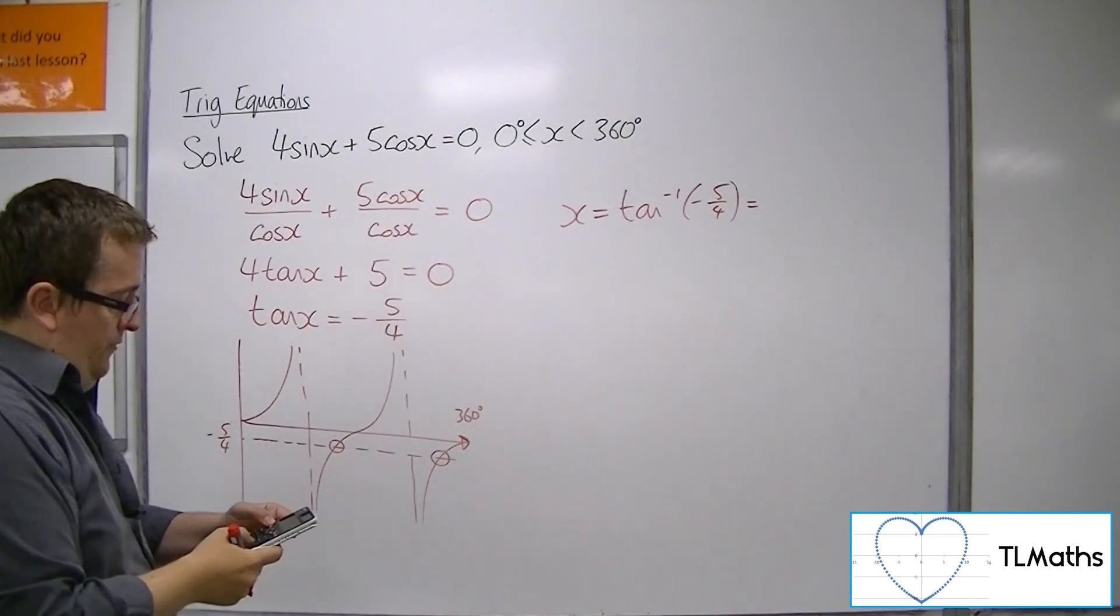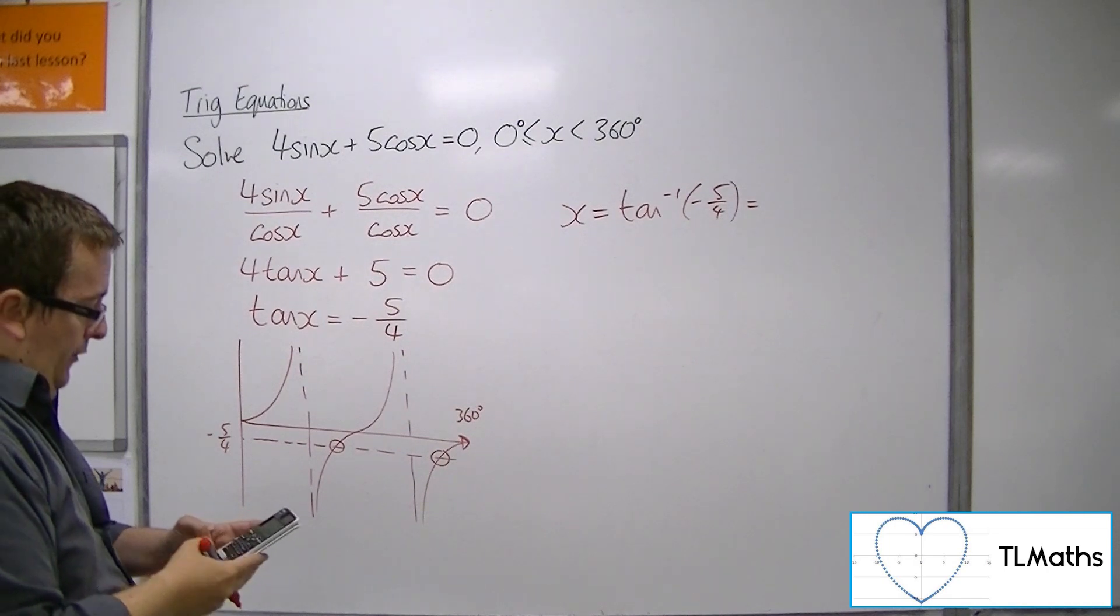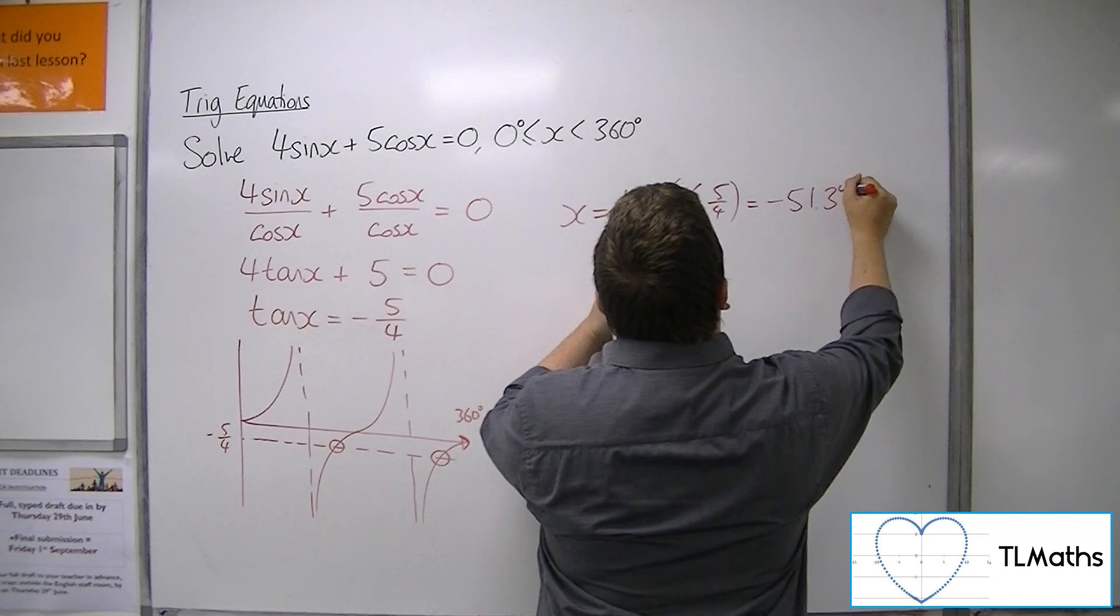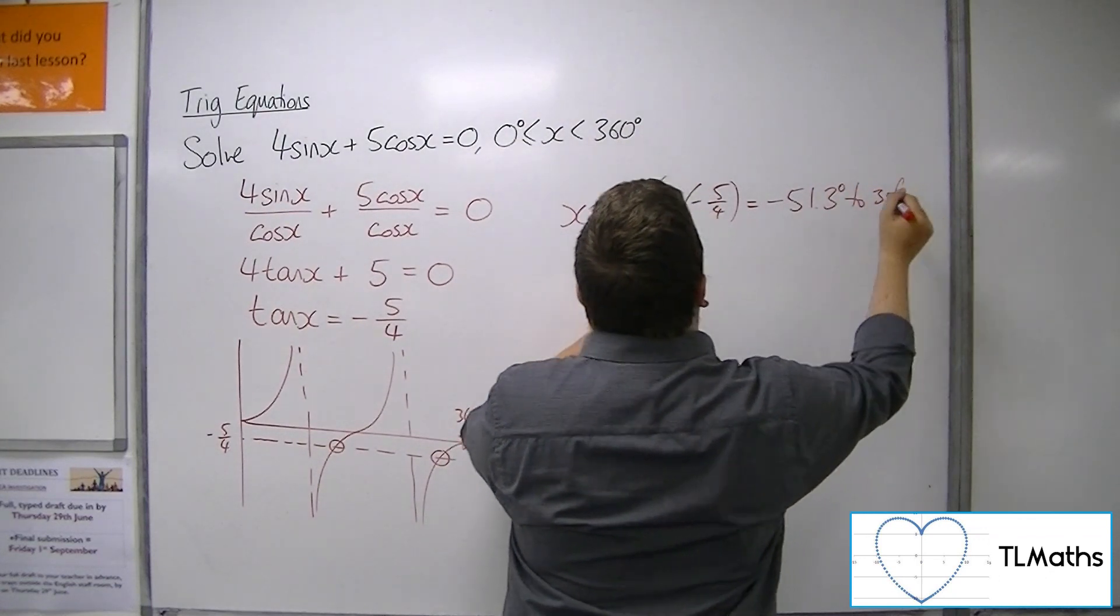OK, so first of all, inverse tan of minus 5 quarters is minus 51.3 degrees to 3 sig fig.